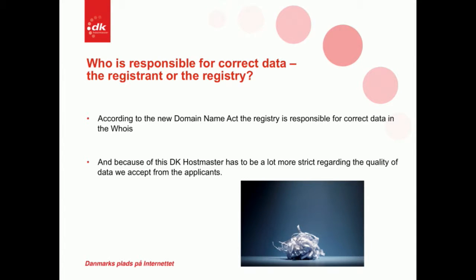So who's responsible for correct data — the registrant or the registry? According to the new domain name act, it's the registry. We have two demands: we must ensure the data is correct, and we must ensure the anonymity of the registrant when they become anonymous in another register. That's the focal point causing us the most trouble — you can't have a registrant visible in WHOIS for a week if they became anonymous yesterday. We do this check once a day, and because of this, we've had to become much stricter about data quality and validation.